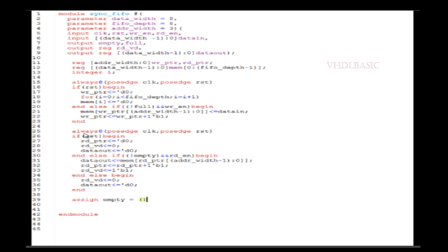If the FIFO is empty or read enable is not received, we de-assert read_valid and set the default value for data_out, which is what I am setting in the else statement.